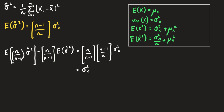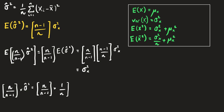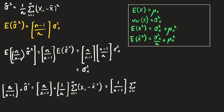Multiplying n/(n-1) by σ̂² = (1/n)·Σ(xi - x̄)² gives [n/(n-1)]·(1/n)·Σ(xi - x̄)² = (1/(n-1))·Σ(xi - x̄)². This is often referred to as s², which is an unbiased estimator of the population variance of x.